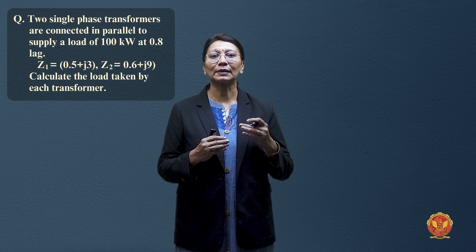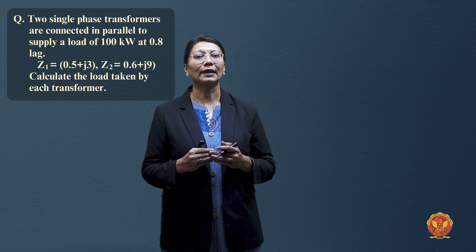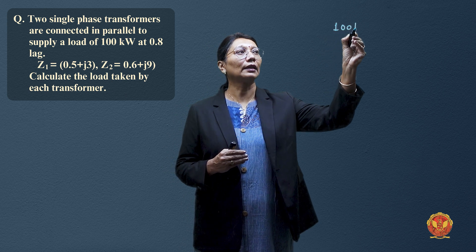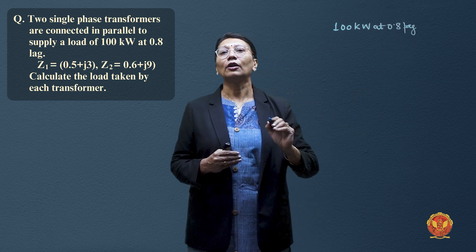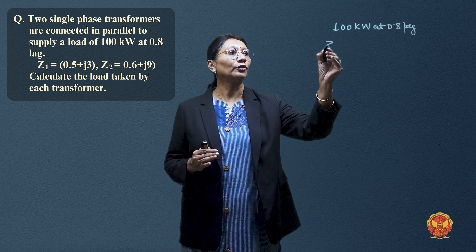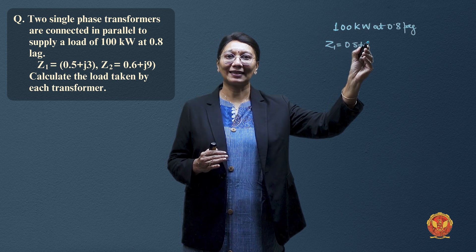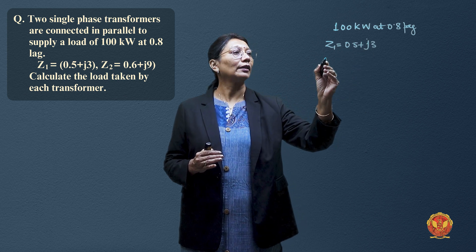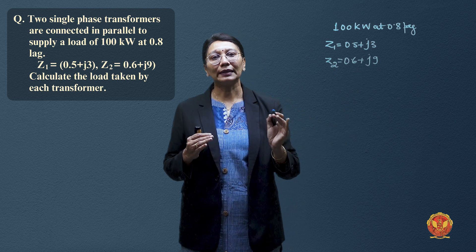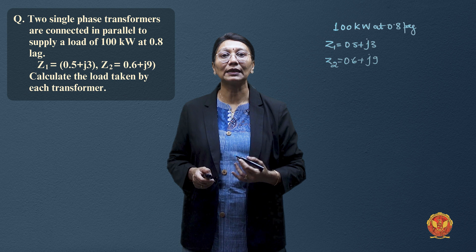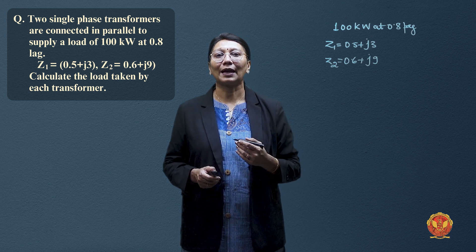Hello, let's solve some numerical based on the parallel operation of transformers. We have a small problem — two single-phase transformers are connected in parallel. The load they are supplying has a rating of 100 kilowatts at 0.8 power factor lagging. The impedance of both transformers is given as Z1 = 0.5 + j3 and Z2 = 0.6 + j9. From this data, we have to calculate the load taken by each of the transformers.